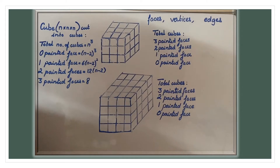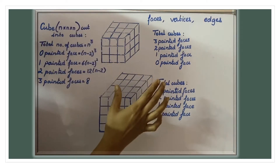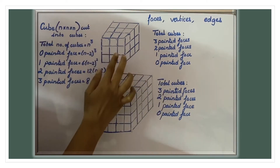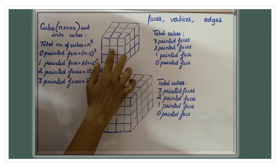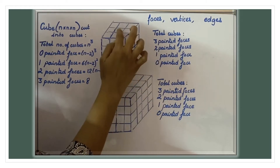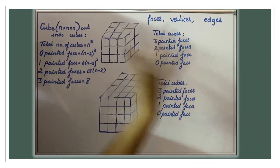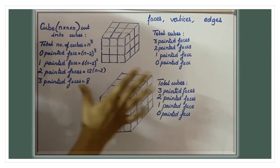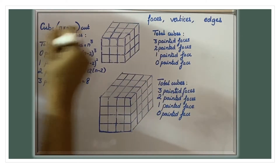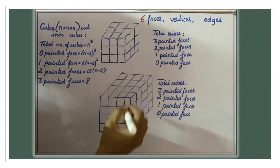A cube has six faces: front, right, top, bottom, left, and back — the back is hidden. So totally there are six faces in a cube.